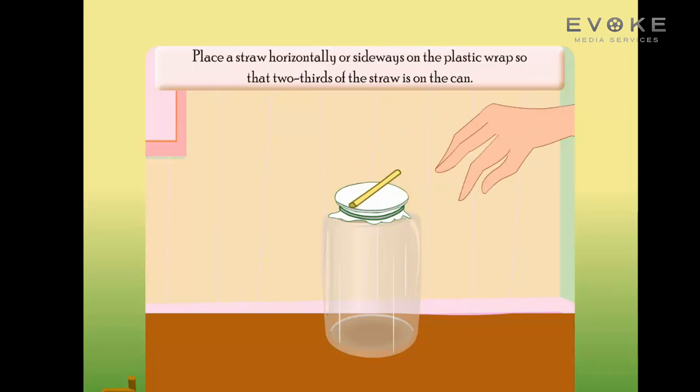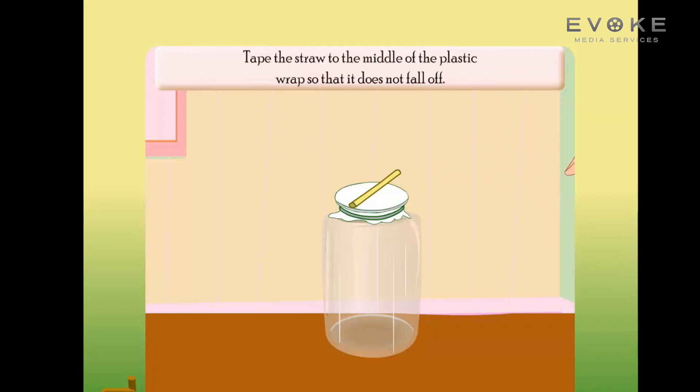Place a straw horizontally or sideways on the plastic wrap so that two-thirds of the straw is on the can. Tape the straw to the middle of the plastic wrap so that it does not fall off.